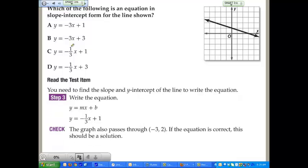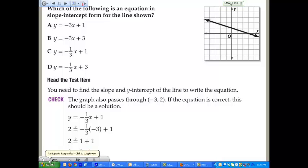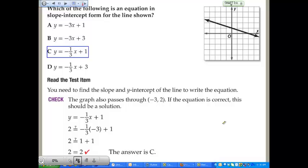To check it, you could say the graph passes through point negative 3, 2, and if the equation is true, this should be a solution. So take your equation, y equals negative 1 third x plus 1, plug in the negative 3 for your x value and the 2 for your y value and solve it. See if they end up coming out to be equal to each other, and in this case they do. 2 does equal 2. So that is a good equation for the graph of the line. The correct answer is C.